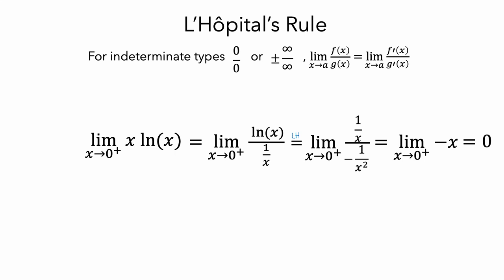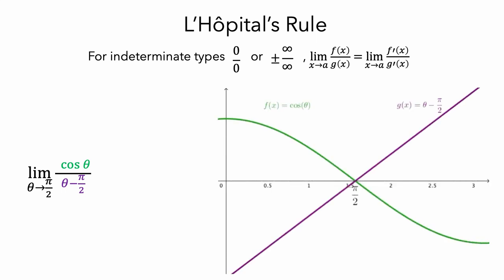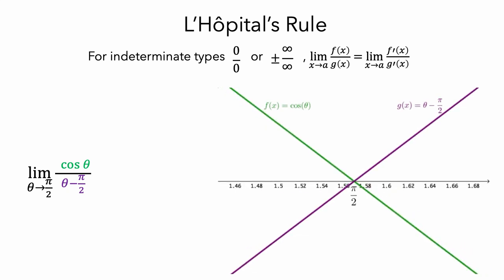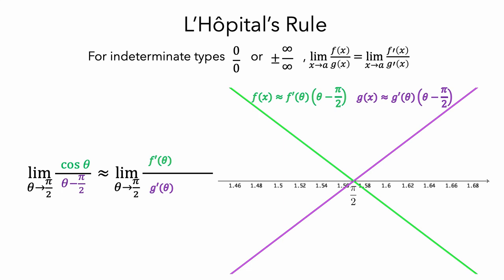Now that we've gone through three examples of how to use the rule, let's think about why this rule works. To do this, let's look back at the first example. There are some formal ways to prove that L'Hôpital's rule works, but I'll sketch out a basic idea. Here is a graph of cosine theta in green, and theta minus pi over 2 in purple. If we look at the limit as theta gets close to pi over 2, then we're essentially zooming in to look at how the functions behave at this particular value of theta. When we do this, the functions appear linear. So we can replace cosine of theta with the line that is tangent to it at pi over 2. The equation of this line is the slope — that is, the derivative of cosine — times theta minus pi over 2. We can also replace theta minus pi over 2 with a line that is tangent to it at pi over 2, whose equation is the derivative times theta minus pi over 2. And now we can replace the numerator and denominator in the limit with these approximations. The common terms in the numerator and denominator cancel, leaving us with L'Hôpital's rule.